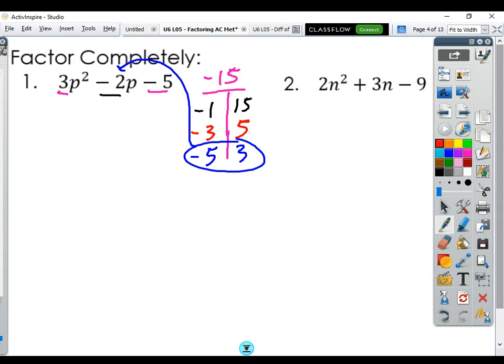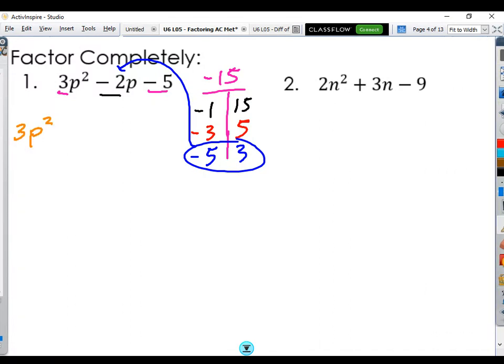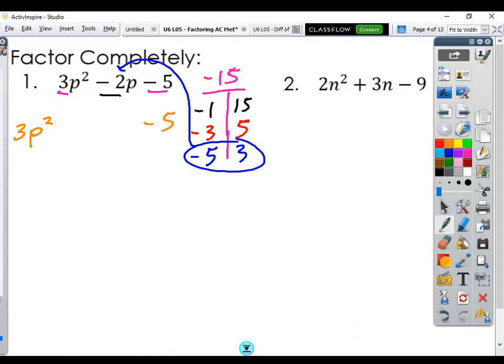So now we've got our two middle terms. So what we do is we rewrite. Our first term stays the same. So 3p squared. Our last term stays the same. So minus 5. But the two middle terms, remember this was a p term. So it's going to be p's in the middle.